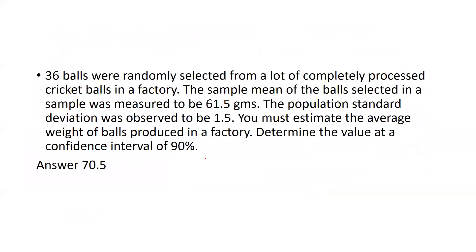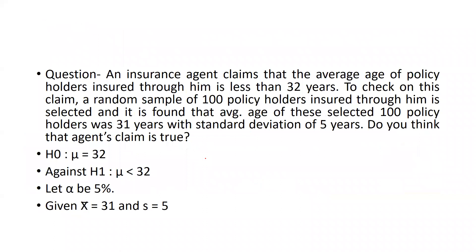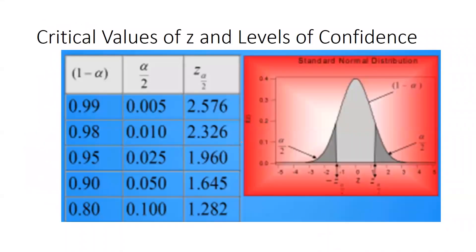Now let's start discussing the curve. I had already explained critical values of z and confidence levels. You can see: at 0.99 confidence, alpha/2 is 0.005 and the z-value is 2.576; at 0.98 it is 2.326; at 0.95 it is 1.96; at 0.90 it is 1.645; and at 0.80 it is 1.282.